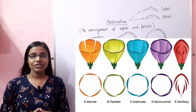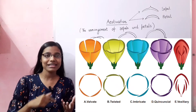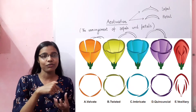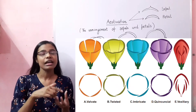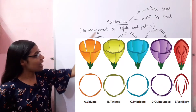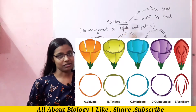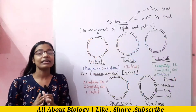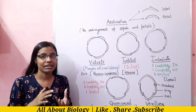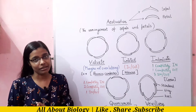Aestivation simply means the arrangement of sepals as well as petals within a floral whorl in a floral bud. There are different types of arrangements of the sepals as well as of the petals.